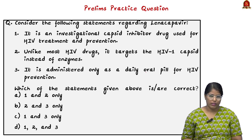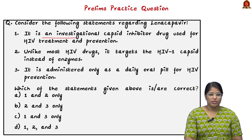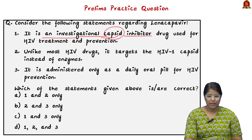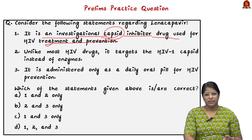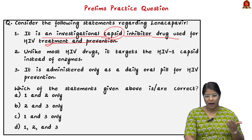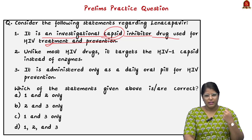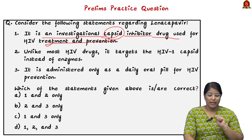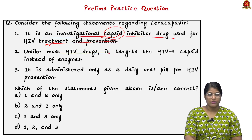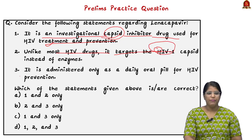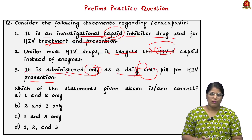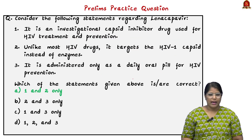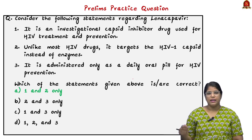Based on this, I have created a question with three statements. Statement 1: it is an investigational capsid inhibitor drug used for HIV treatment and prevention. Statement 2: unlike most HIV drugs, it targets the HIV-1 capsid instead of enzymes. Statement 3: it is administered only as a daily oral pill for HIV prevention. The correct answer is Option A — 1 and 2 only — because it is currently in the trial process and it is not a daily oral pill; instead, it is a yearly shot.